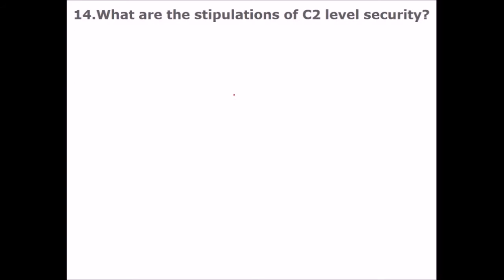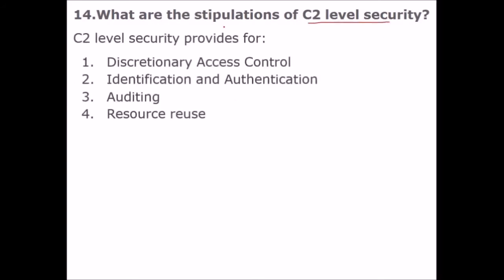What are the stipulations of C2 level security? C2 level security provides discretionary access control, identification, authentication, auditing, and resource isolation.